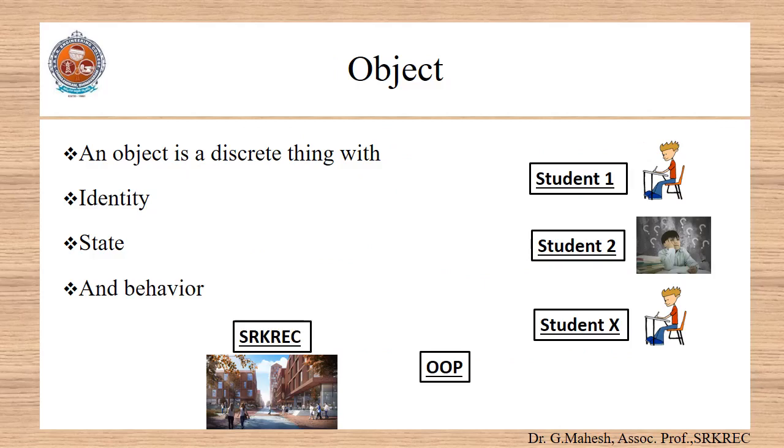What is meant by an object? An object is a discrete thing with identity, state and behavior. The meaning of identity is object should have an identifier. The meaning of the state is object should have a mechanism like attributes to store the state information. The state information is values of attributes for different attributes.